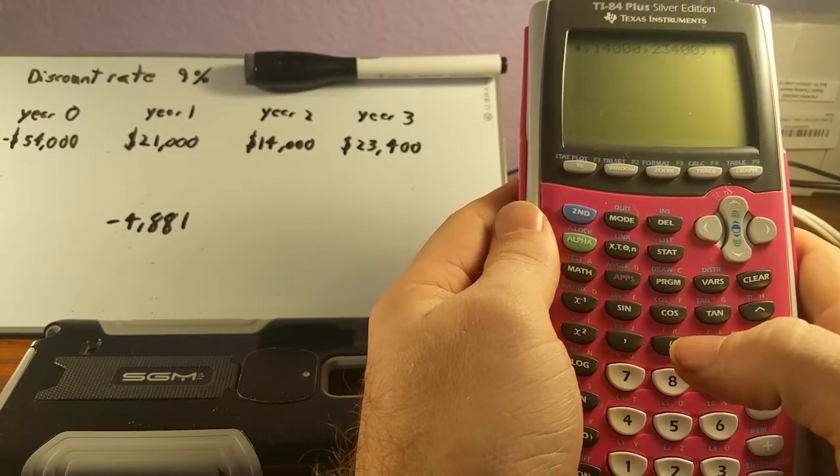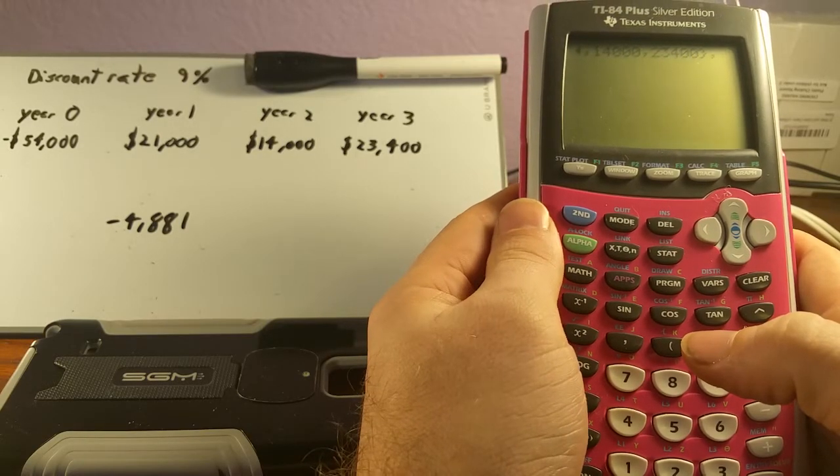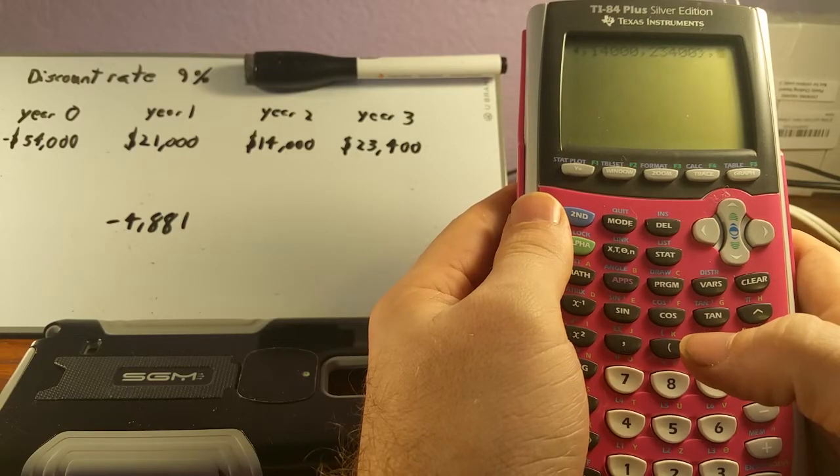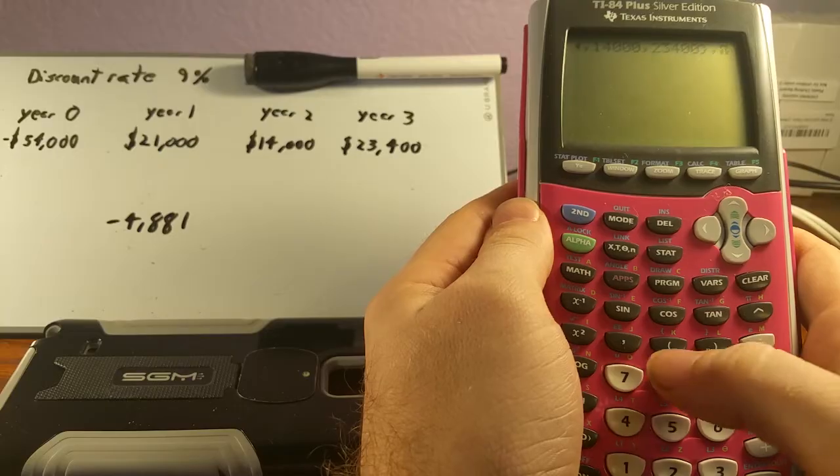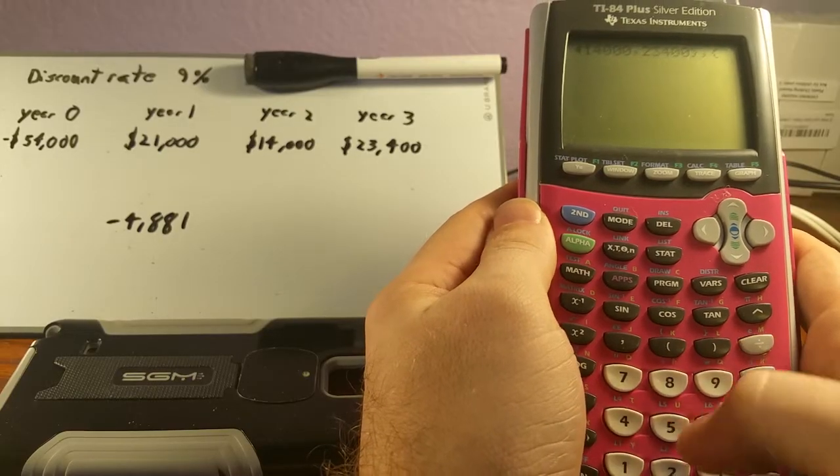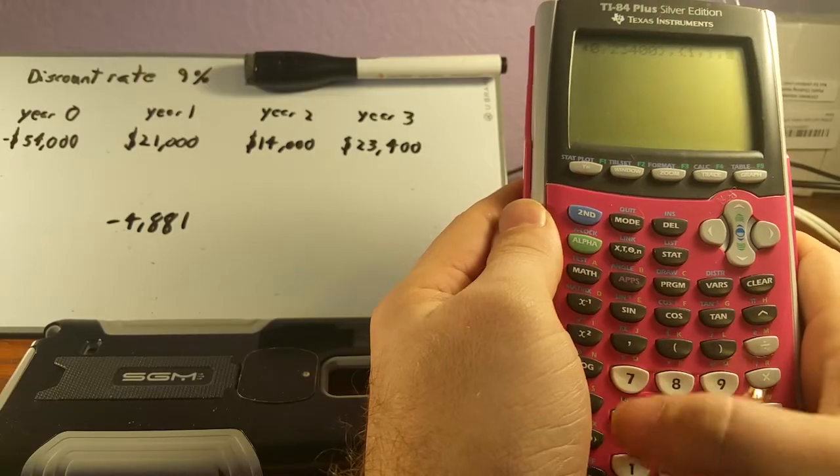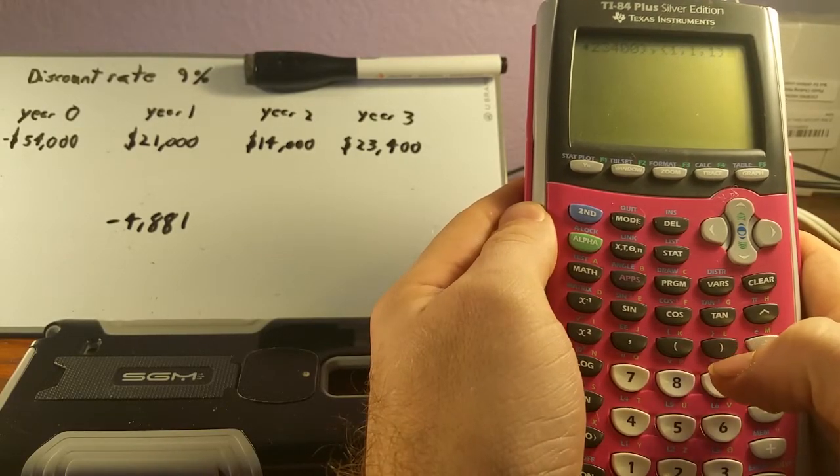Now this next part, we're basically just going to be saying how many periods there are per year, and we're going to go simple and say that there's one per year. Now we will have to put in a 1 for each corresponding year. So we'll hit our 2nd here, and we'll start another curly brace, and we'll do 1, comma, 1, comma, 1, and then 2nd and close curly brace.